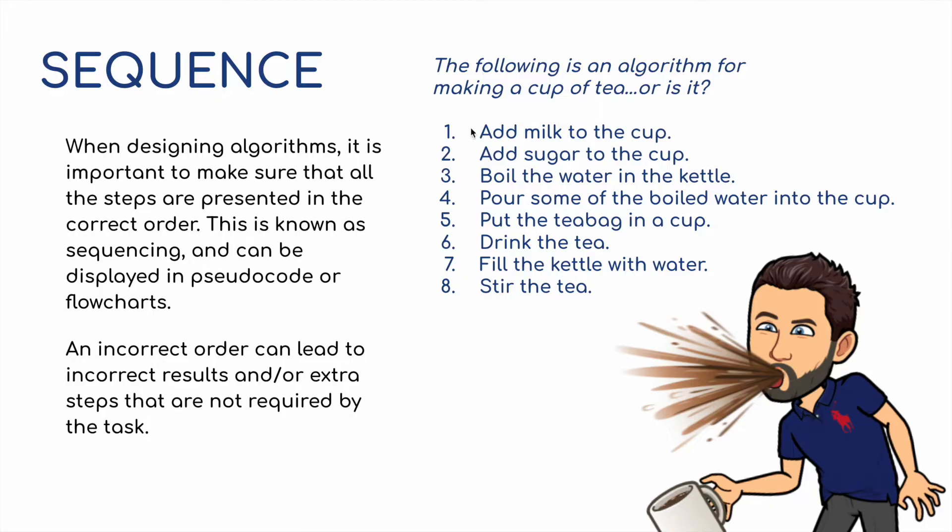For example, the following is an algorithm for making a cup of tea, or is it? Number one, we're going to add milk to the cup, and then we're going to add sugar to the cup, then we're going to boil the water in the kettle, then we're going to pour some of the boiling water into the cup, then we're going to put in a teabag, then we're going to drink the tea, then we're going to fill the kettle with water, and then we're going to stir the tea. Well, that's not the correct order.